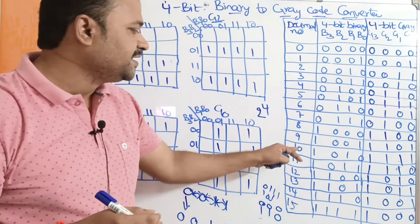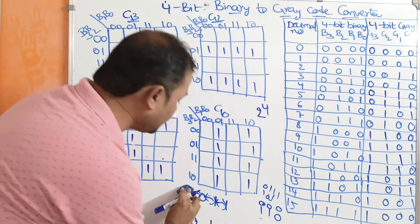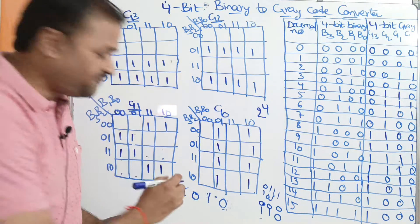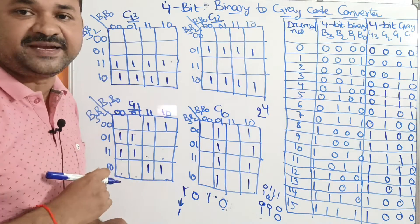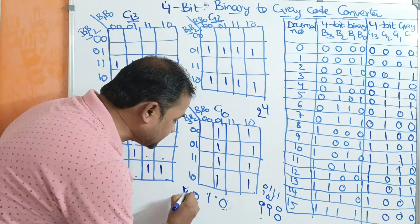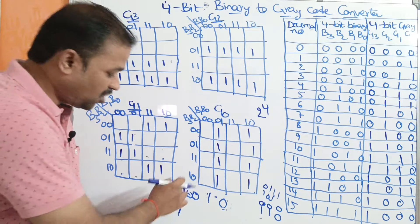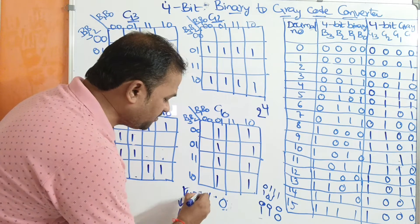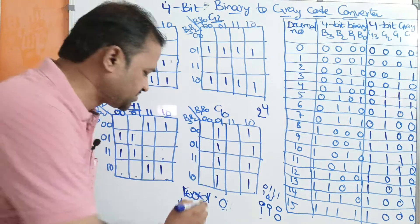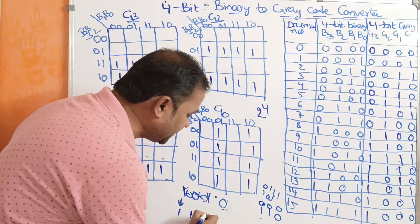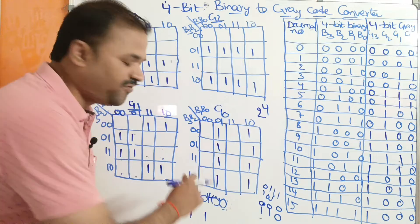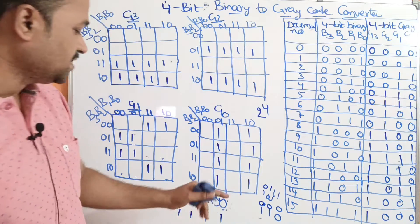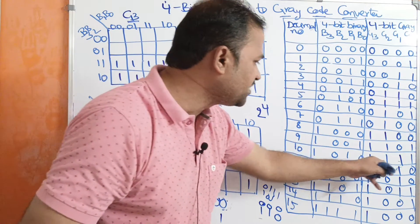Now let us take another number. Let the number be 1010. We write the first bit as it is: 1. Next, XOR of 1 and 0 is 1. XOR of 0 and 1 is 1 (different bits). XOR of 1 and 0 is 1. So for 1010, the gray code is all 1s — that is 1111.